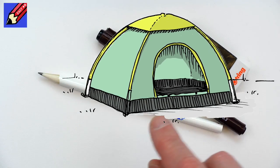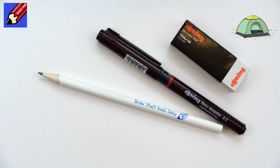To draw a festival tent, you'll need a pencil, a pen, and an eraser. But let's not talk about it. Let's do it.